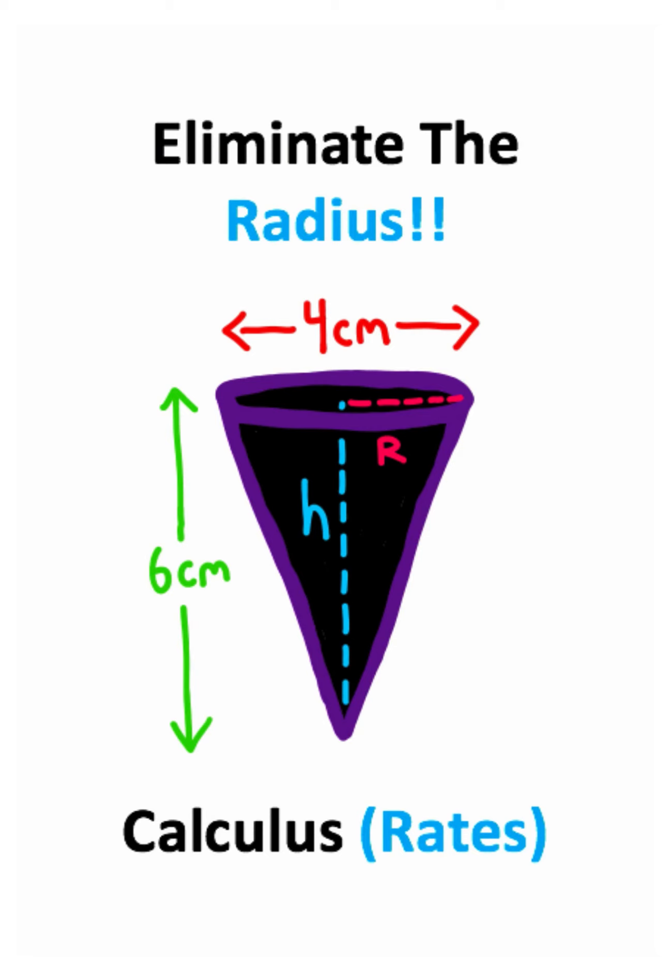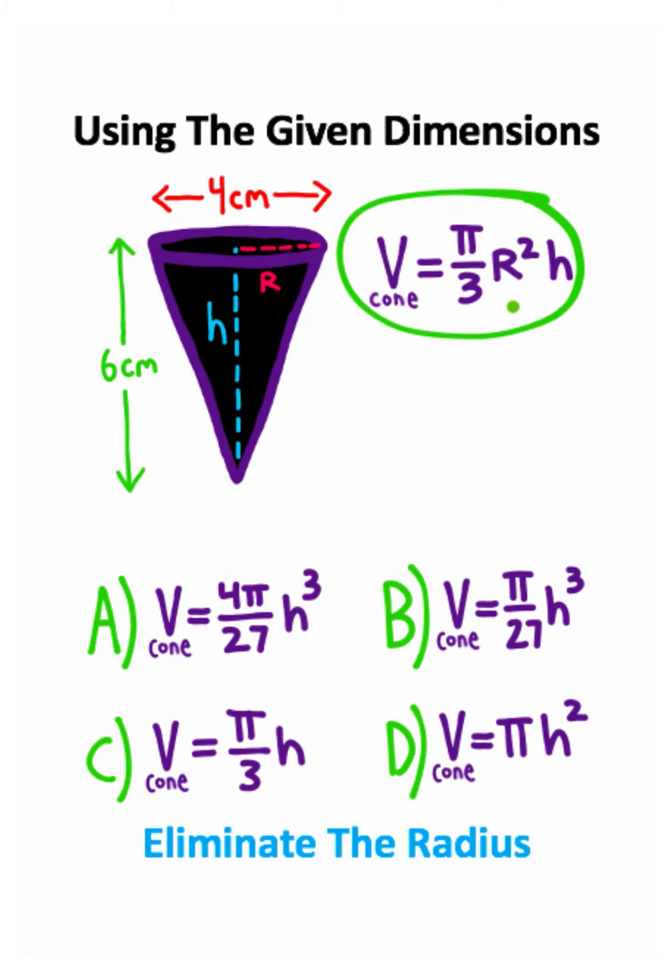Let's see if we can eliminate the radius. This equation is the volume of a cone. Often times in calculus and related rates, you'll want to eliminate the radius or a certain variable. We're going to go over how to do that.